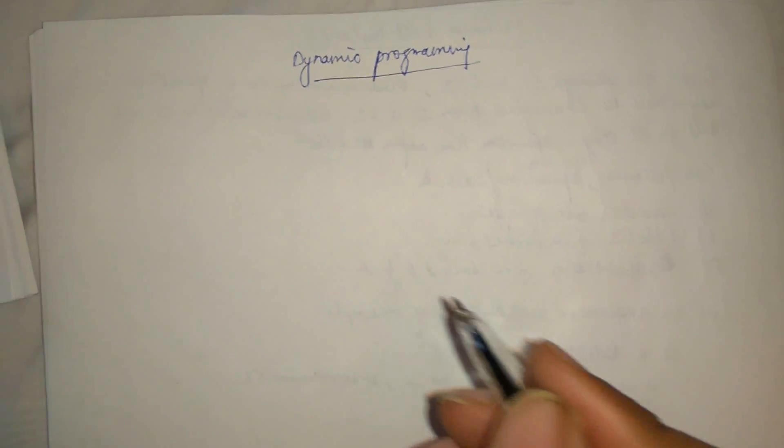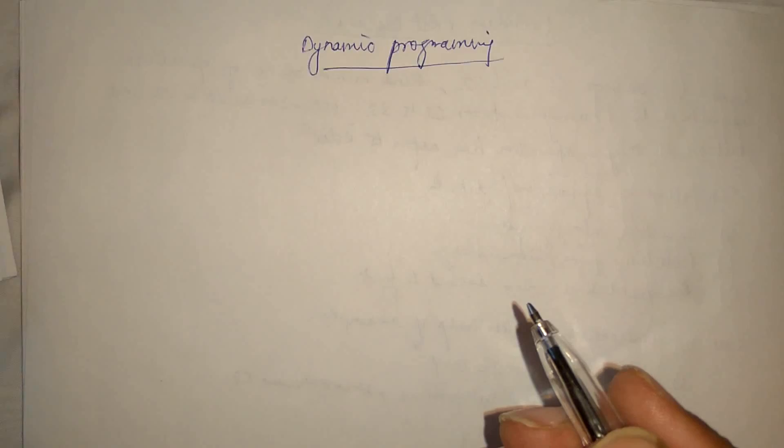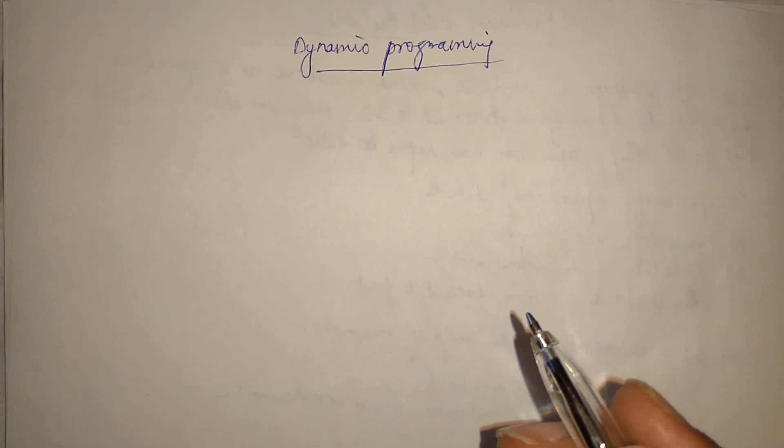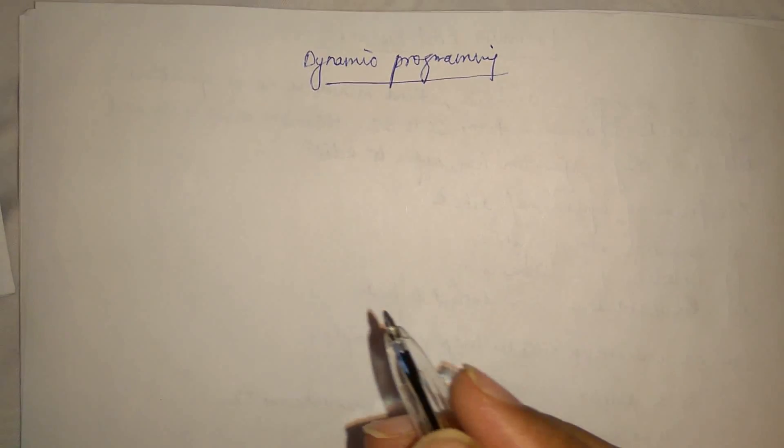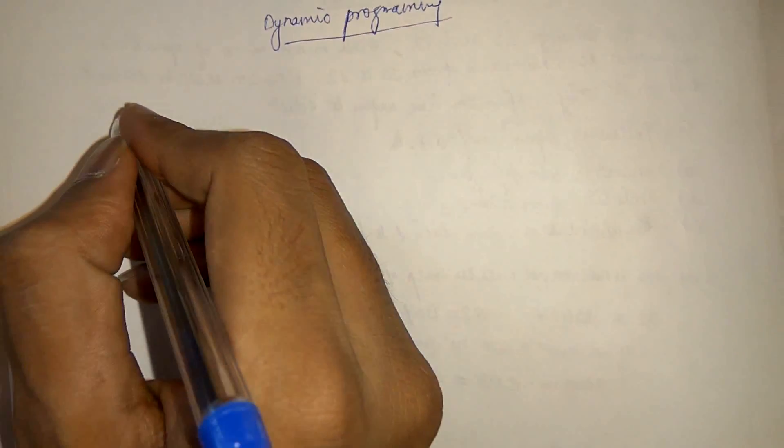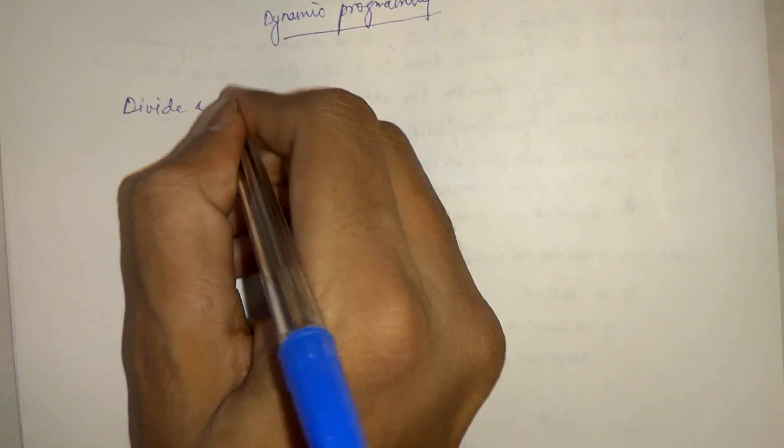What is Dynamic Programming? Dynamic Programming is basically one of the approaches we use in computer science to solve a problem. If you remember, we have one approach known as divide and conquer.